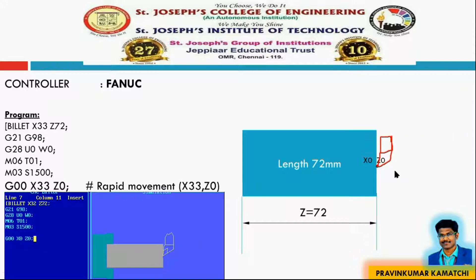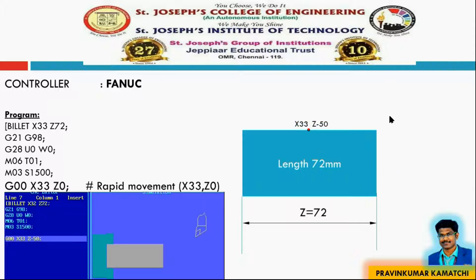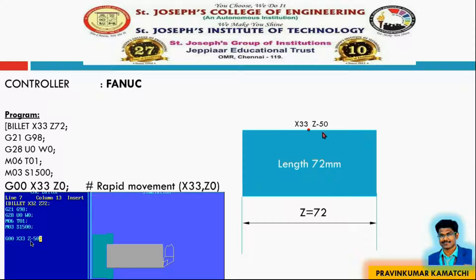Above the axis line the X value will be positive; below the axis line the X value will be negative. For example, giving X minus 33 and Z0 places the tool there. For Z: up to the front end of the workpiece Z will be positive, at the front end Z will be zero, and behind the workpiece the Z value will be negative. For example, X33 and Z minus 50 places the tool at that position.